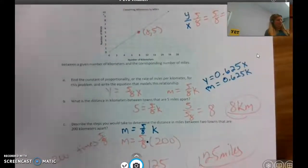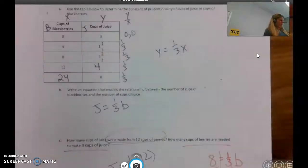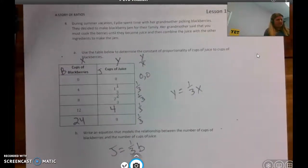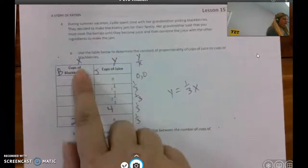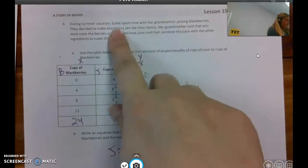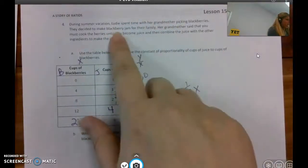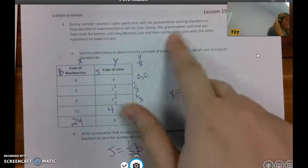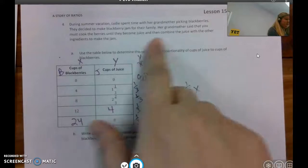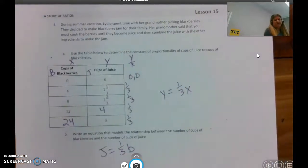Okay, moving on. Last question, summer vacation, cups of blackberries, cups of juice. Okay, the grandmother and Lydia spent time picking blackberries and they were going to make jam. Must cook the berries until they become juice and then combine the juice with other ingredients to make the jam. I didn't know that until I did this problem. I've never made jam, maybe you have.